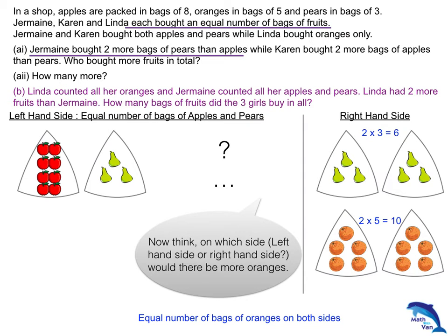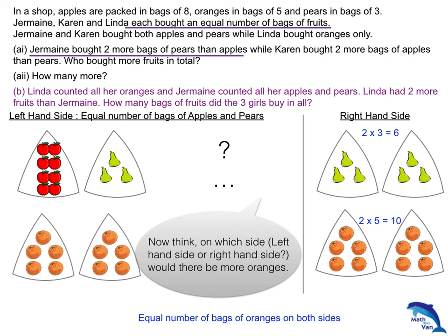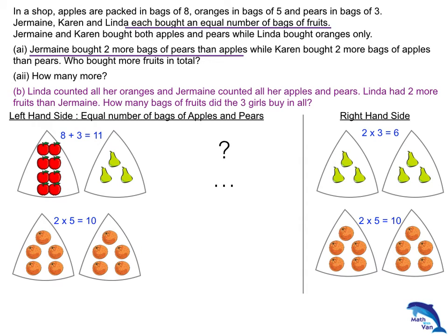Let's look at the left-hand side. If I have 1 bag of apples and 1 bag of pears, I would also have 2 bags of oranges. Looking at the total number of fruits in these 2 bags: 8 plus 3 is 11, while 2 times 5 is 10. You realize there will be a shortage of 1 orange.